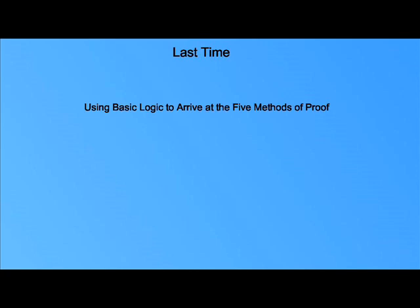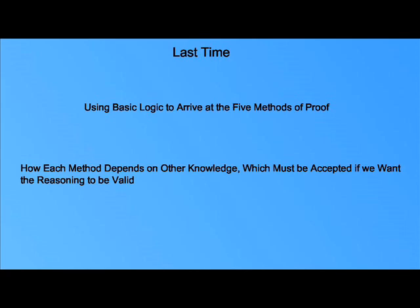Last time we looked at how we can use basic logic to arrive at the five methods of proof, and how each of those methods depends on other knowledge, which we must accept if we want it to be valid reasoning.